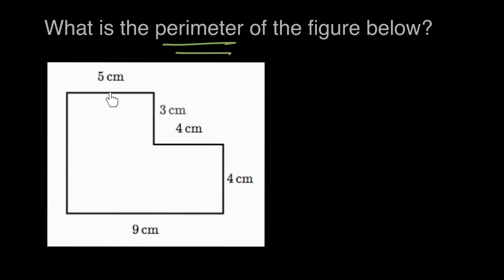Perimeter is the distance all the way around the outside of a shape. So in this case, if I were to walk around the outside, or maybe a human's too big, if an awesome little ant was to walk all the way around the outside of this figure, how far she walked would be the perimeter.